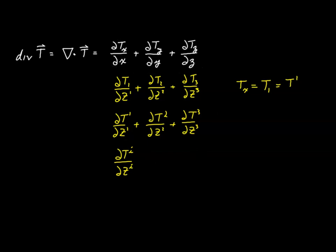So does that mean we have a valid expression for the divergence applicable in all coordinate systems? The answer is we're still not sure, because there's one other test: do we really have a tensor equation? In other words, is the partial derivative of Ti with respect to Zj a tensor? If it's a tensor, we've got what we want. But if it's not a tensor, this will not work. To answer that, we need to derive the transformation equation for a partial derivative.